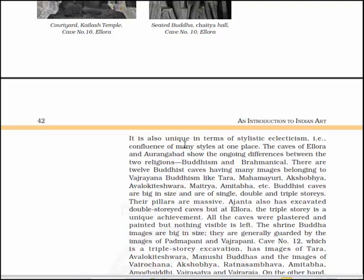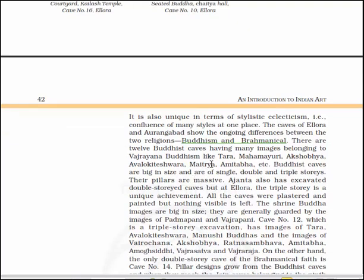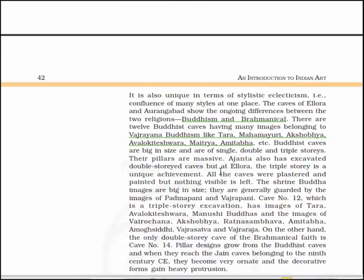Elora is also unique in terms of stylistic eclecticism — a confluence of many styles at one place. The caves of Elora and Aurangabad show the ongoing interaction between Buddhism and Brahminical religion. There are 12 Buddhist caves having many images belonging to Vajrayana Buddhism like Tara, Mahamayuri, Akshobhya, Avalokiteshvara, Maitreya, Amitabha, etc. The Buddhist caves are big in size and are of single, double and triple stories, with massive pillars. Ajanta also has double-storied caves but at Elora the triple-storied is a unique achievement. All the caves were plastered and painted but nothing visible is left.